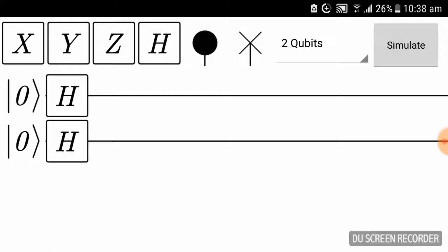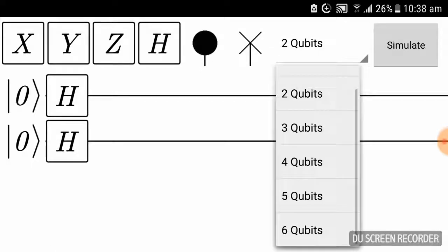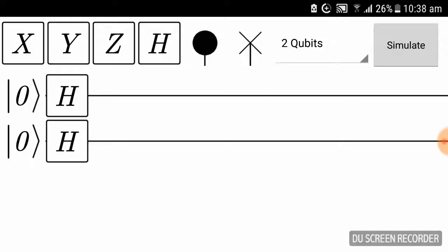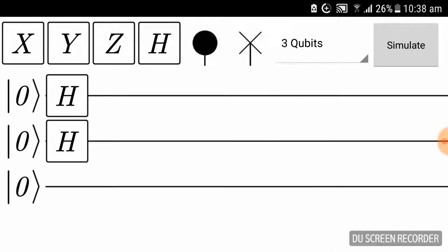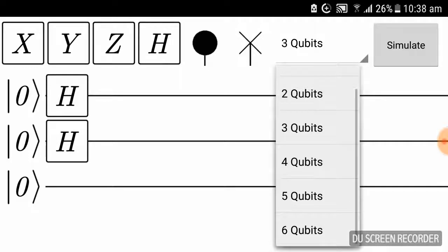Now, if I choose two qubits, how many databases can I search? Two to the power of two is four. If I choose three, two to the power of three is eight, so I can search eight databases.